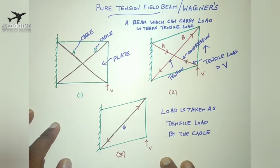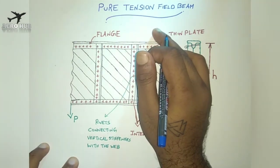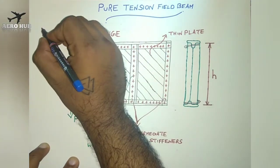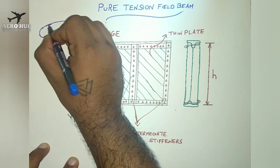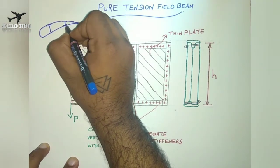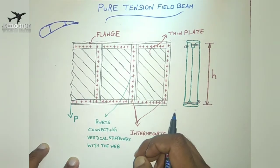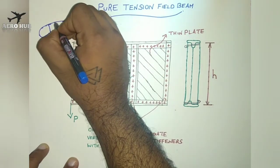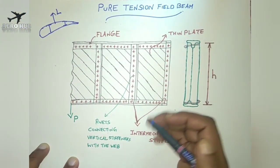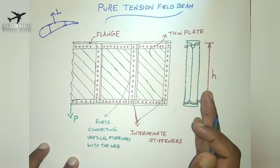Now we will see how this beam is applied in airframe applications, especially for the spar. If you take a section of a wing, we have an airfoil section comprised of two spars — front spar and rear spar. The spar is responsible for avoiding twisting of the wing. An example of a pure tension field beam is the spar structure, where the web of the spar carries the load mainly as tension when the wing is subjected to lift load.